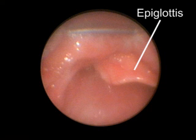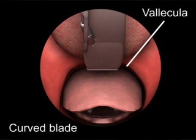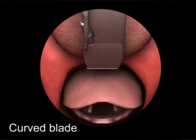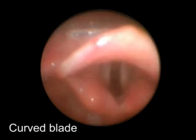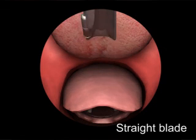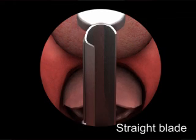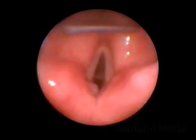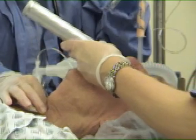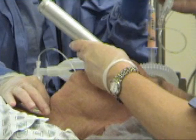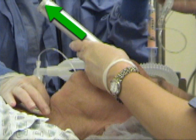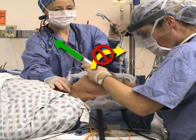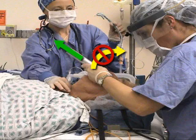Ideal placement of the laryngoscope blade depends on whether a curved or straight blade is used. Place the tip of the curved blade into the vallecula between the base of the tongue and the epiglottis, and lift anteriorly to expose the vocal cords. When using a straight blade, place the tip of the blade just past the epiglottis and lift anteriorly to expose the vocal cords. When the tip of the blade is correctly positioned, lift the laryngoscope upwards and forwards at a 45 degree angle. Direct the force of your lift along the axis of the laryngoscope handle in the direction of the ceiling over the patient's feet. Avoid bending your wrist or rocking the blade against the patient's teeth, which can result in dental or soft tissue injury and will not enhance the view of the glottis.